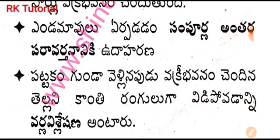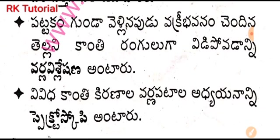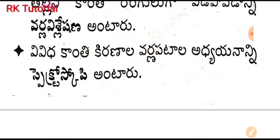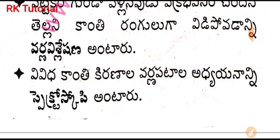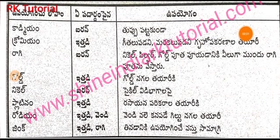A ray of light passing through a prism undergoes refraction twice. Examples of total internal reflection: mirages (desert mirage) and rainbow formation. The splitting of white light into its constituent colors is called dispersion (varna vishleshana). The study of various light spectra is called spectroscopy.